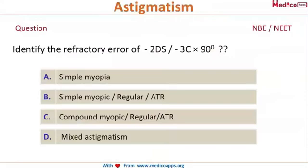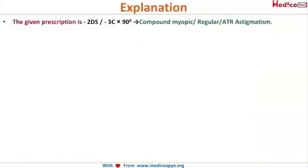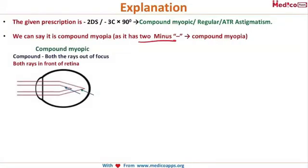There are a few questions. You have to identify the refractive error of minus 2 diopter sphere, minus 3 diopter cylinder at 90 degrees. The prescription given is minus 2 diopter sphere and minus 3 diopter cylinder at 90 degrees axis. It is a compound myopic regular against-the-rule astigmatism. Why do we say it is compound? Let's break down the answer.